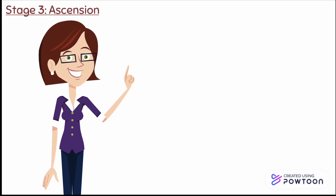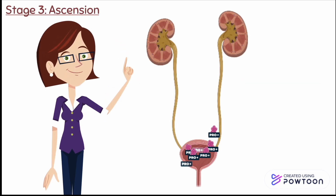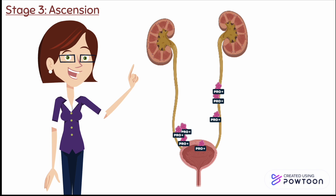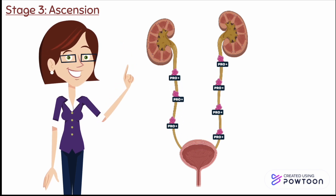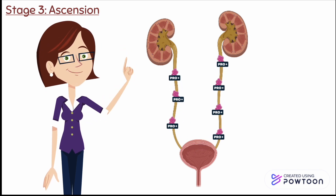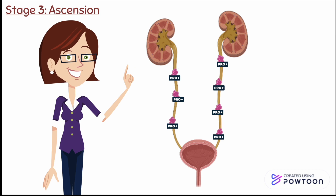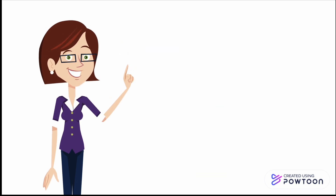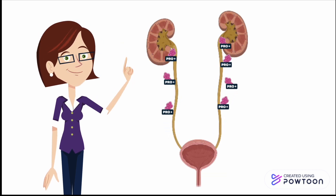Stage 3 is ascension, where the bacteria ascends towards the kidneys via the ureters. Bacterial toxins may also play a role by inhibiting peristalsis, meaning reducing the flow of urine. Bacterial ascension or hematogenous spread infects the renal parenchyma.